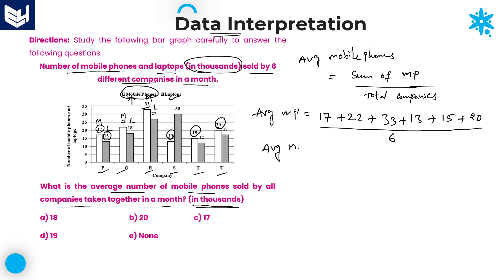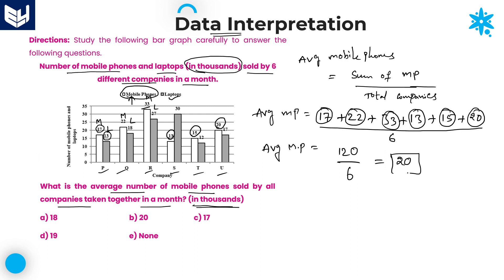The average of mobile phones is equal to the sum divided by 6. Adding: 17 plus 33 is 50; 50 plus 20 is 70; 70 plus 15 is 85; 85 plus 13 is 98; 98 plus 22 is 120. So 120 divided by 6, which equals 20. Therefore, the average number of mobile phones sold by all companies together in a month is 20,000. Option B is the right answer for this question.